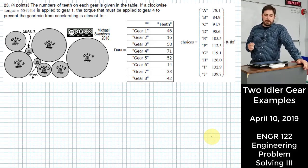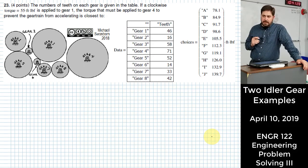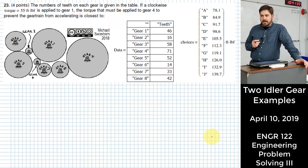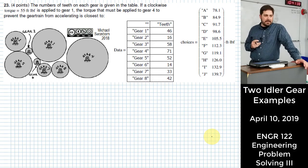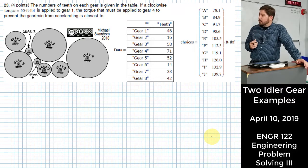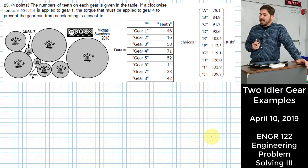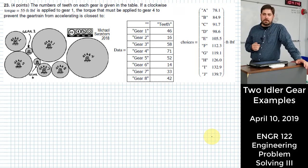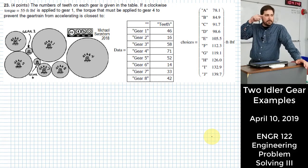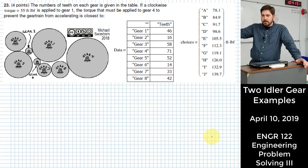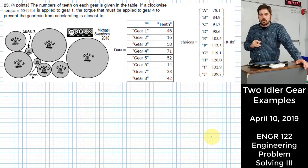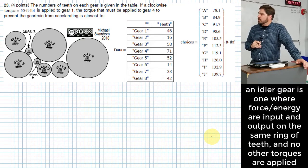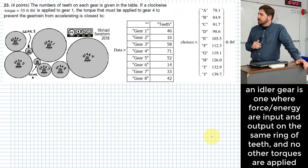So what I want to touch on with the next couple of problems here is the idea of idler gears. This is used a lot of times on exams as a way to make something look nasty and hard to do. But if you can identify that something is an idler gear, it allows you a lot of times to skip over what looks like it would be a lot of intermediate steps and go straight from the front of the problem to the end without a whole lot of those steps.